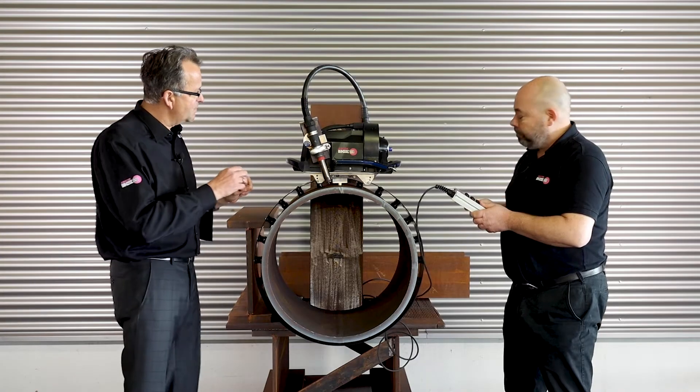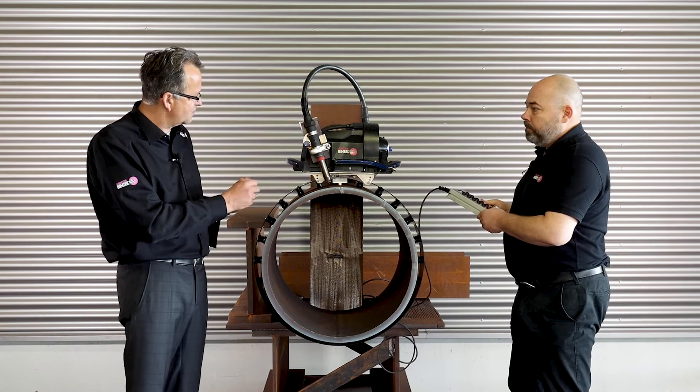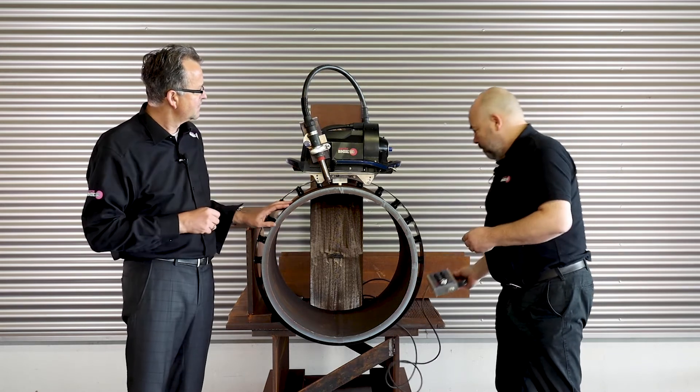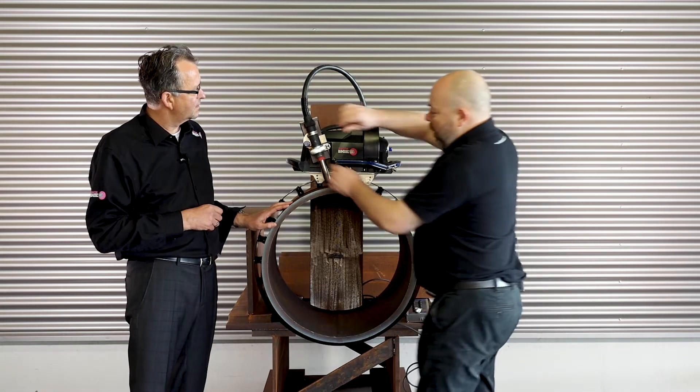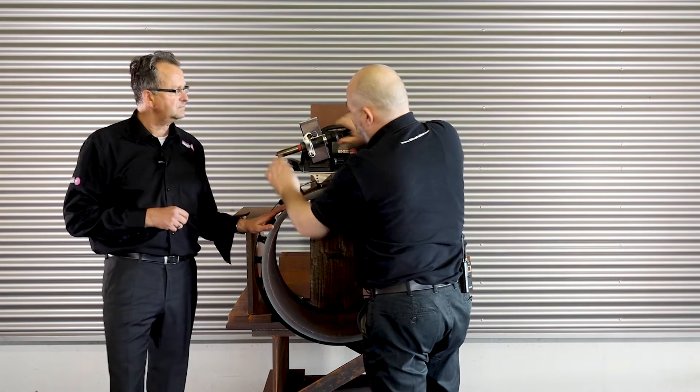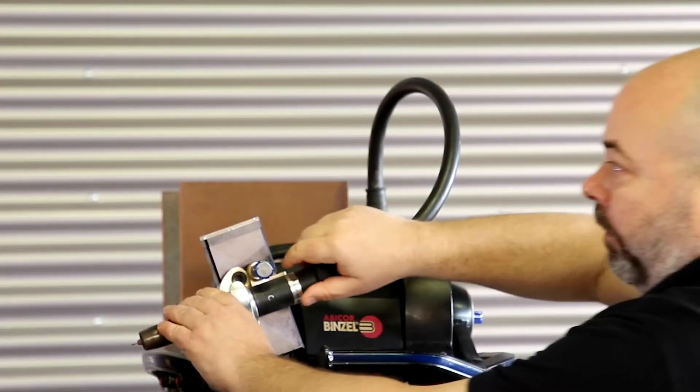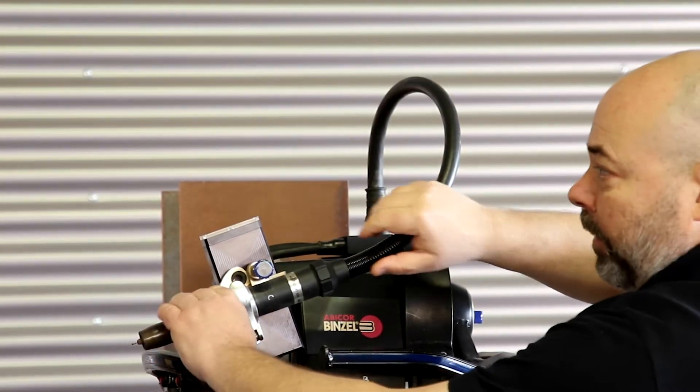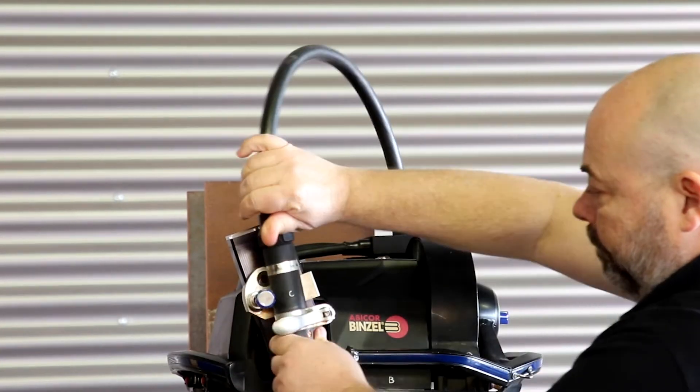And I understood that if I need to do something with the torch, that's easy as well. So changing consumables and stuff like that. Yes, it is prepared so you can just easily set it in a maintenance position and then change all the items here, all the gas nozzles and the contact tips that need to be changed.